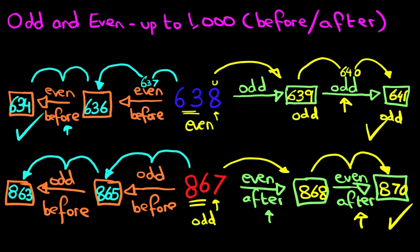So that is how we do odd and even numbers before and after with numbers up to 1000. It looks complicated, but it is very, very simple. Have a review of this tutorial again, and then attempt some of the questions. Have a review of this tutorial. Goodbye.